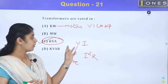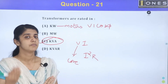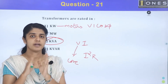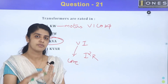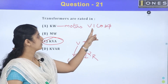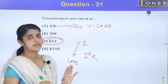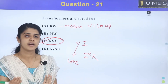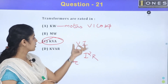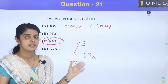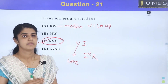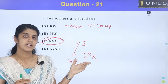The power factor angle is φ, and the power factor is cos φ. KW depends on the power factor angle. In the case of a transformer, the rating does not depend on the power factor; it depends on both sides.